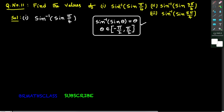Observe this: sin inverse of sin π/4. π/4 means 45 degrees. Is 45 degrees in between −90 and +90? Yes, it is. So sin inverse of sin θ equals θ — this formula works well here. Therefore, the value of sin inverse of sin π/4 is π/4.